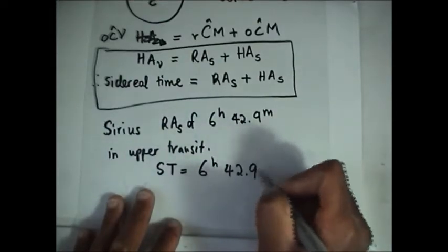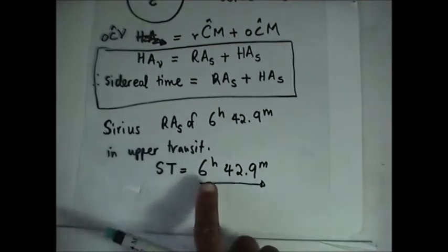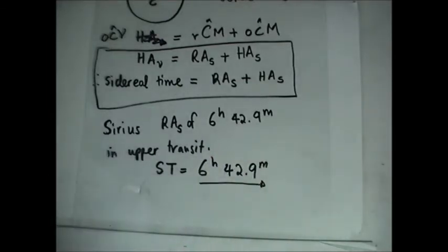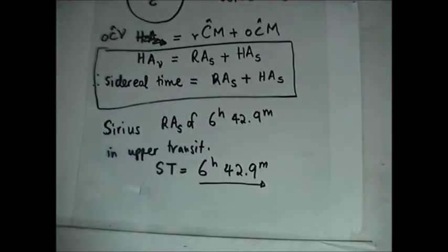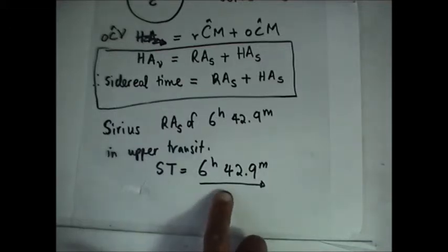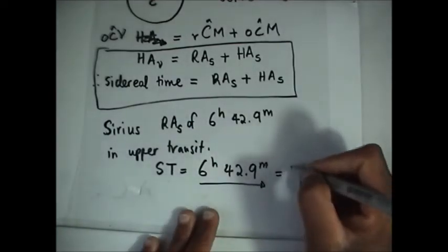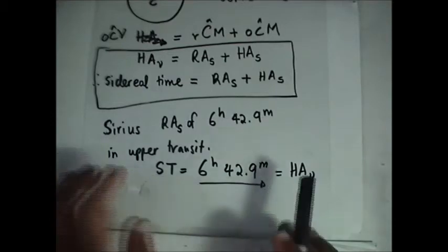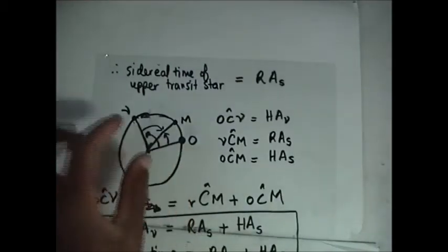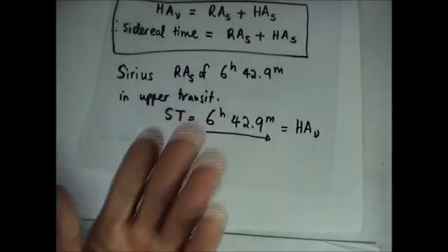So we now know the sidereal time will be 6 hours 42.9 minutes. This is very important — when you are not told the sidereal time, just look at what star is in upper transit. The star in upper transit will automatically give you the sidereal time by this principle. Since sidereal time measures the hour angle of V, V will be 6 hours 42.9 minutes west of the celestial meridian.